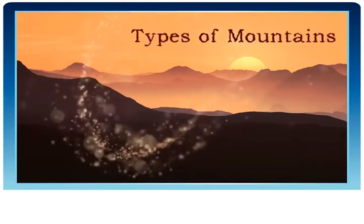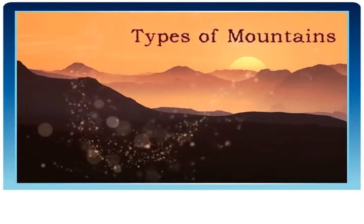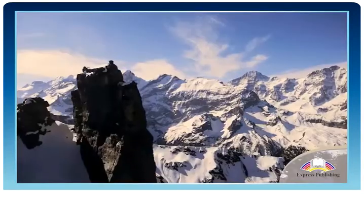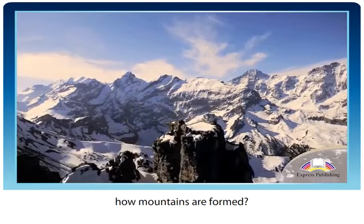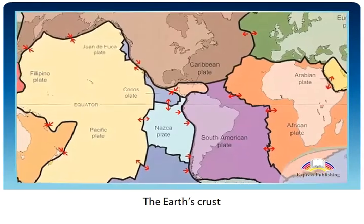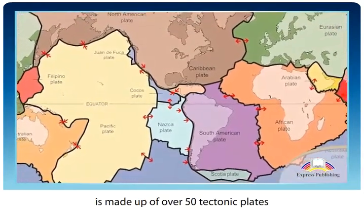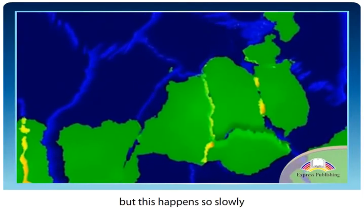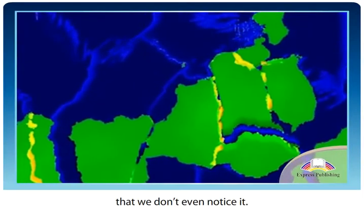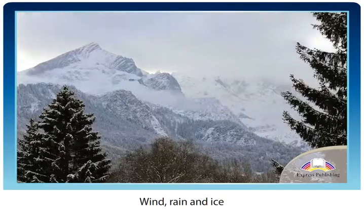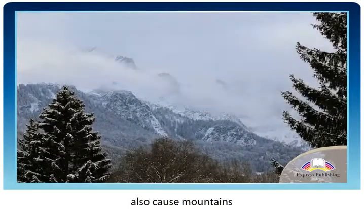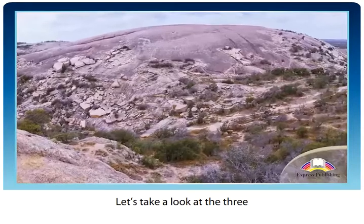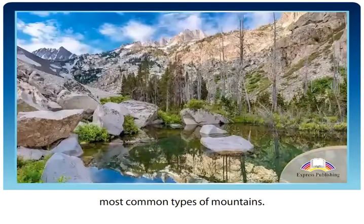Types of Mountains. Have you ever wondered how mountains are formed? The Earth's crust is made up of over 50 tectonic plates that push and pull to form mountains, but this happens so slowly that we don't even notice it. Wind, rain and ice also cause mountains to change shape. Let's take a look at the three most common types of mountains.